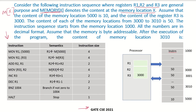Assume that the content of memory location 5000 is 10. Here I have drawn the memory, and at memory location 5000 we have the value 10. The content of register R3 is 3000. Here is the processor with general purpose registers R1, R2, and R3, and in R3 you can see the content 3000.